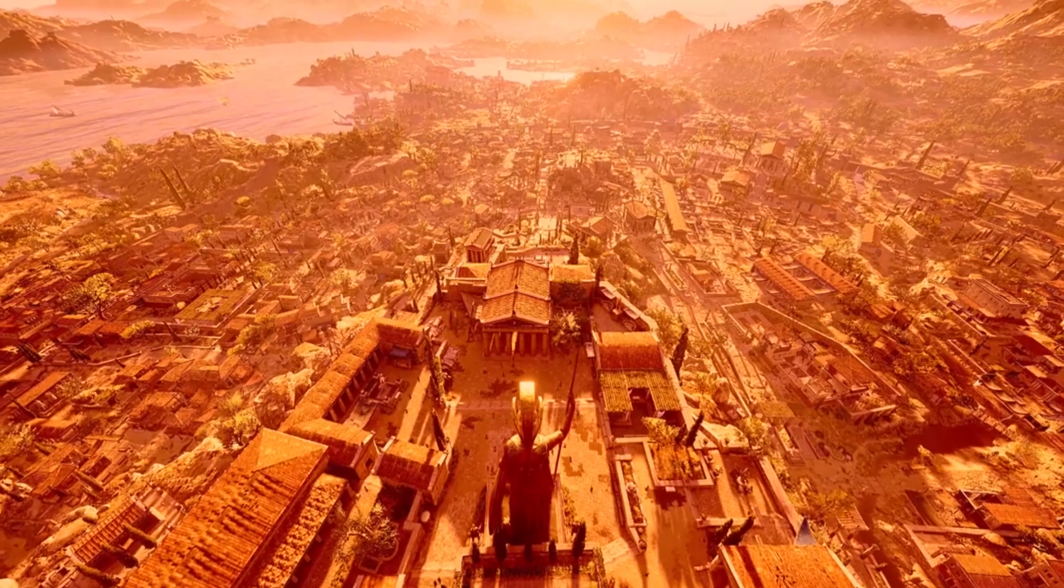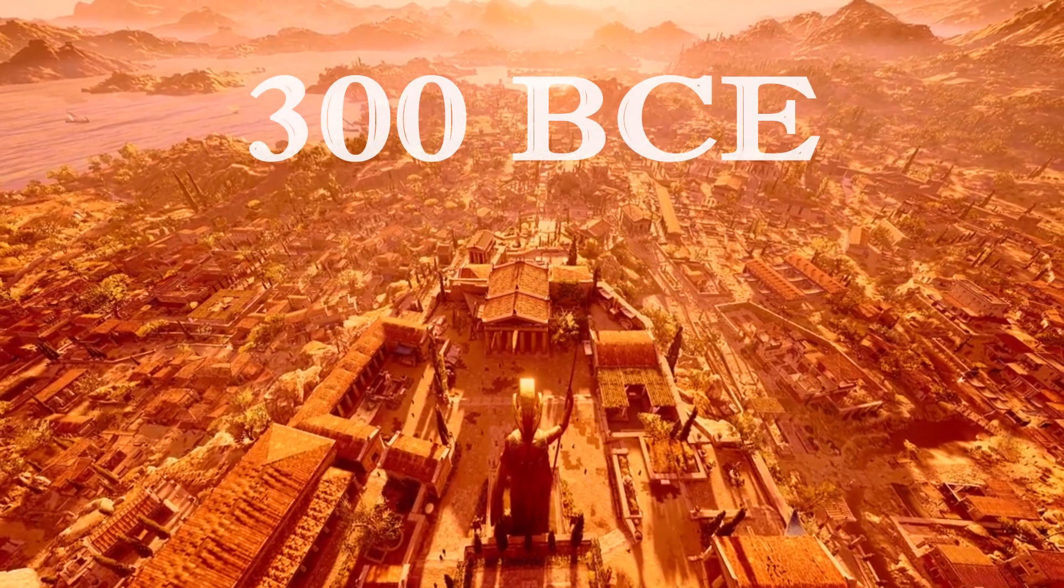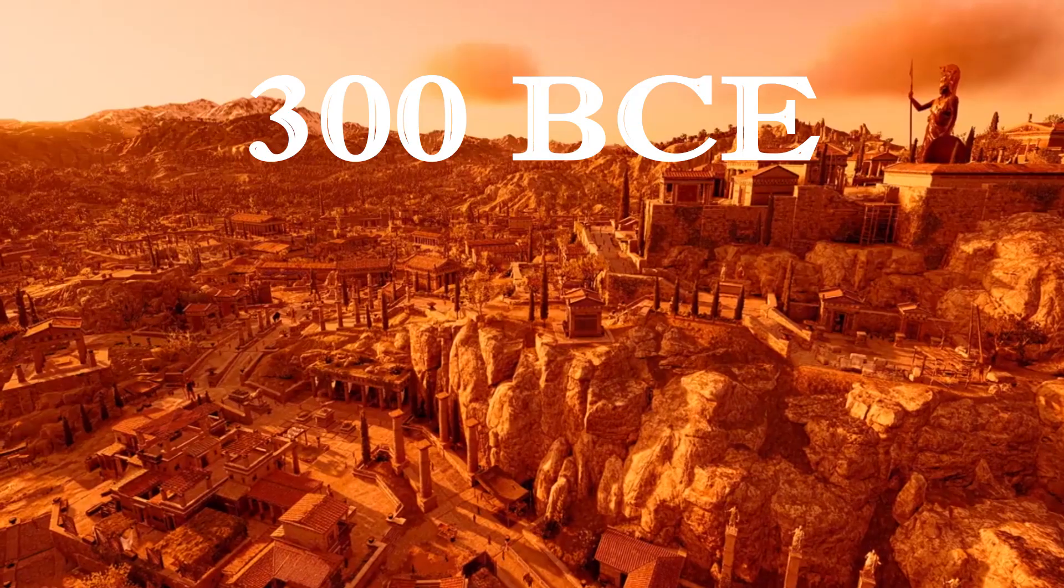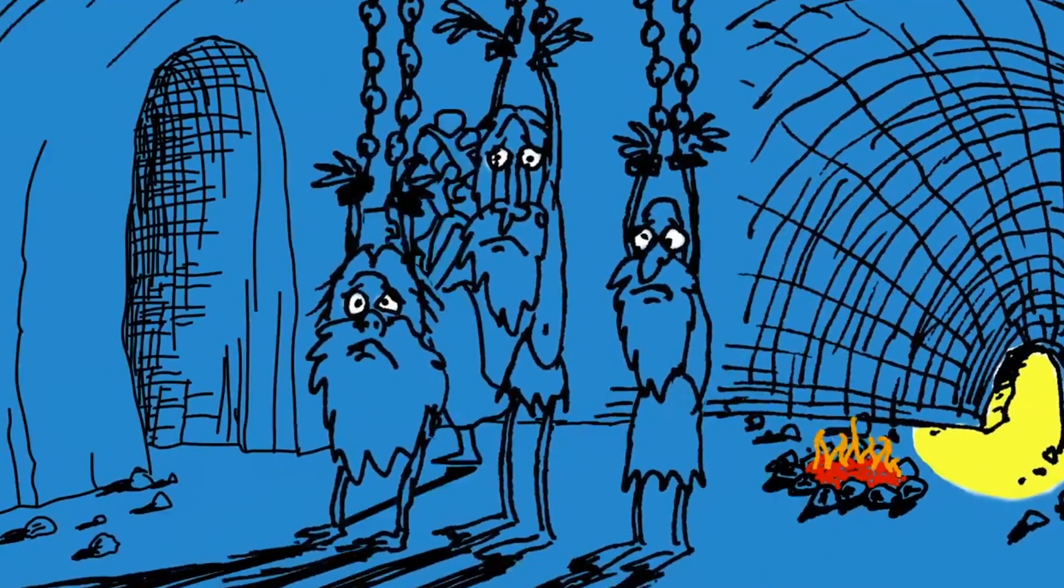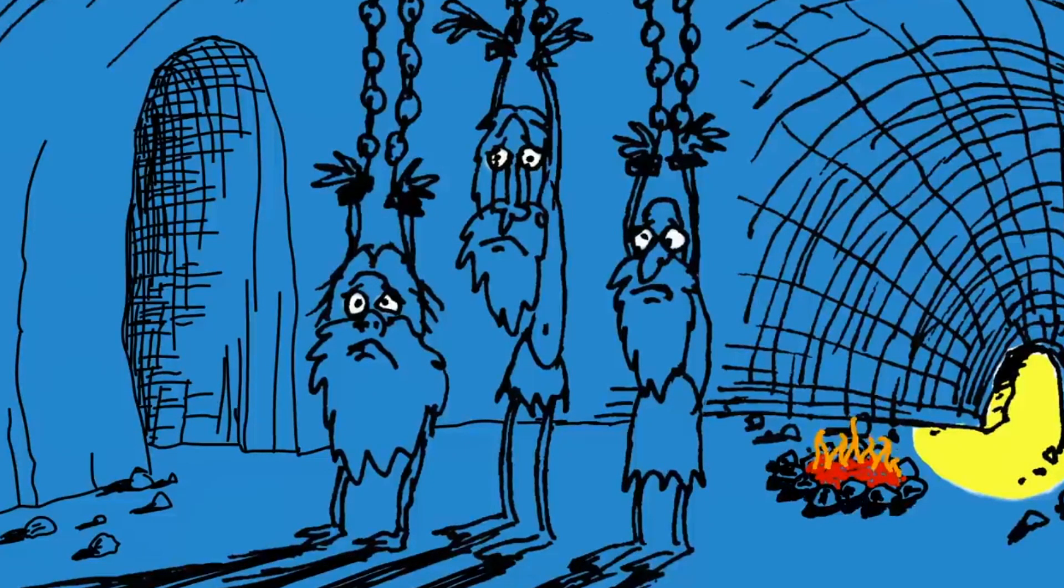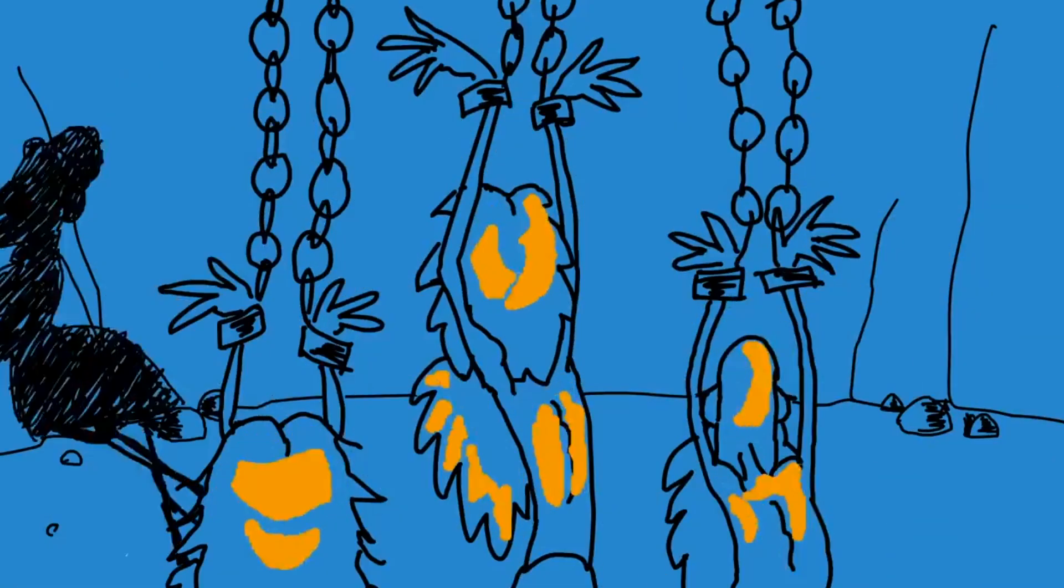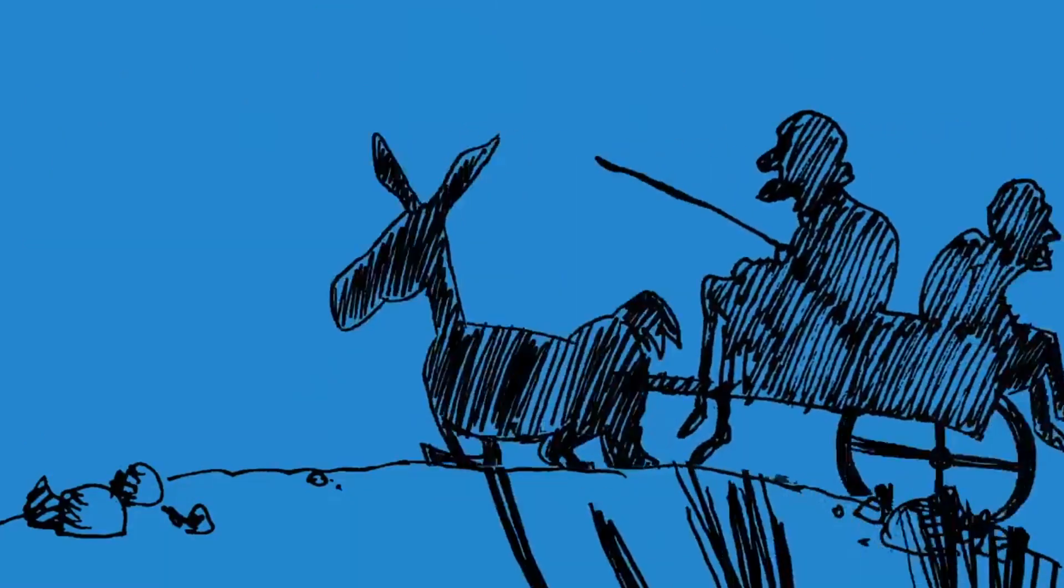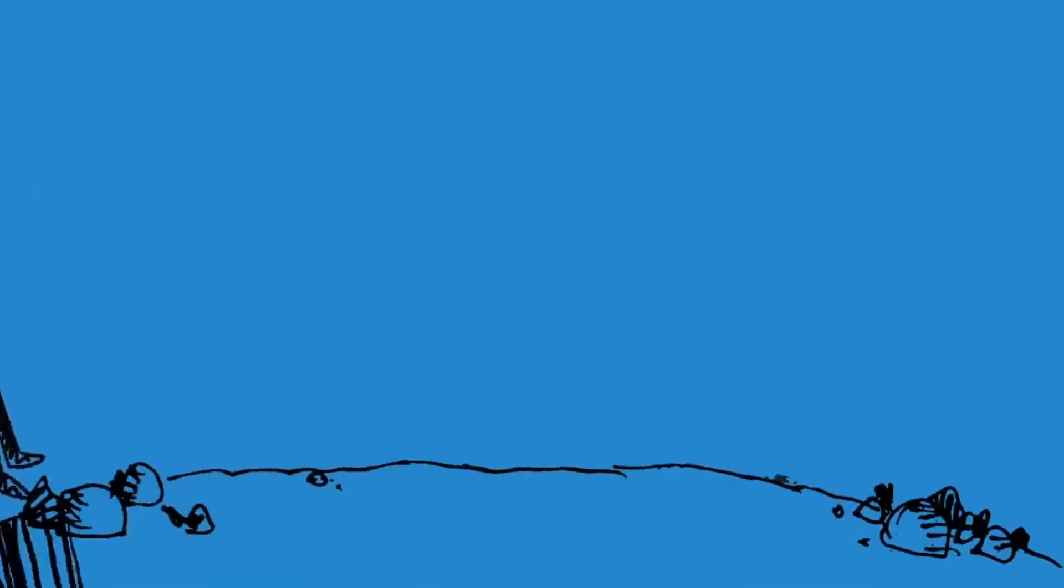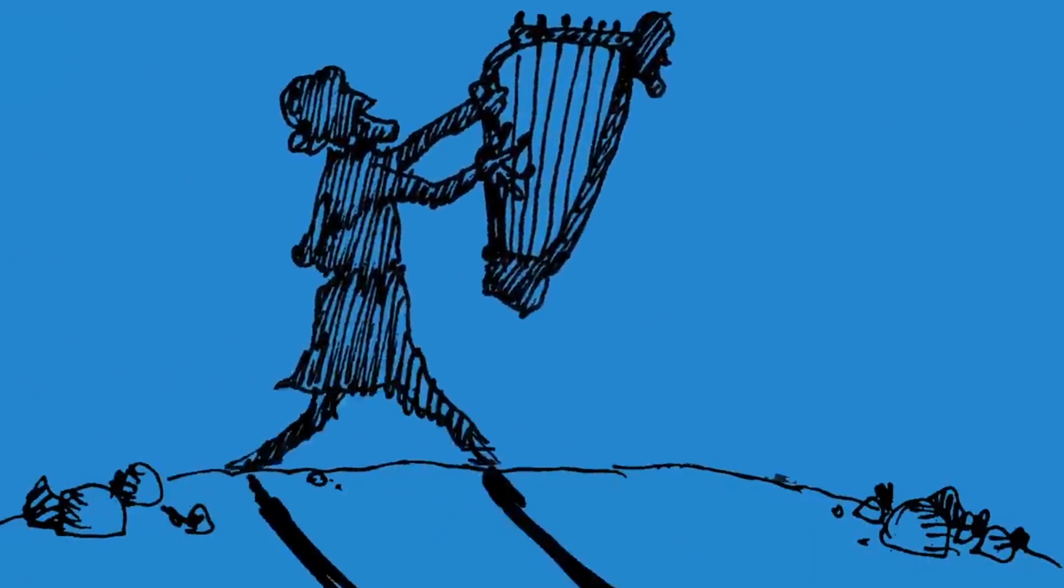I want to start by taking you back all the way to ancient Greece and talk about Plato's allegory of the cave. In this famous centuries-old thought experiment, Plato imagines a group of people chained in a cave facing a blank wall. Behind them, a fire casts shadows of objects on the wall. The prisoners believe these shadows are reality, not realizing that they're merely representations of the true objects behind them.